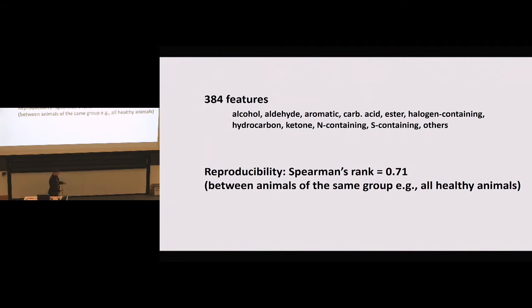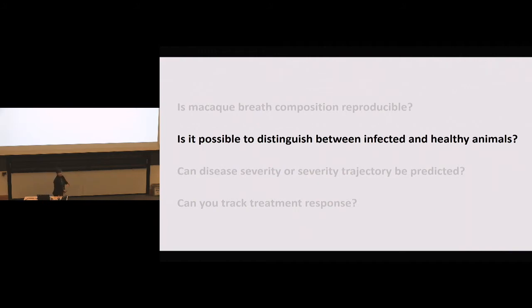So in answer to the first question, if we look at narrowing down to the number of features we would consider in statistical analysis, in this case 384 features from the macaque breath, a range of some of your favorite functional groups, for those of you who like chemistry, we found that across animals of the same group, so all healthy animals, that their breath was reasonably the same. A 0.71 Spearman rank is pretty good for a biological anything, especially across multiple animals on different days with different diets. Now, I imagine our breath would be a bit more variable because we all have different diets and different stuff going on in our bodies, but at least we can measure in these animals and show that they're pretty similar.